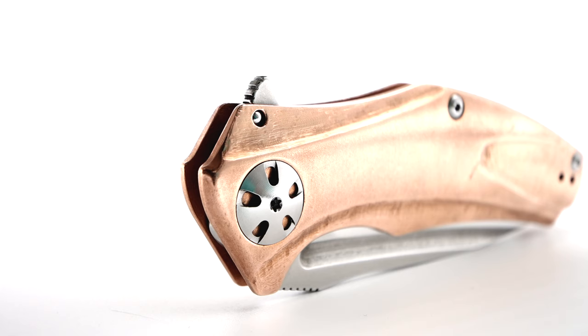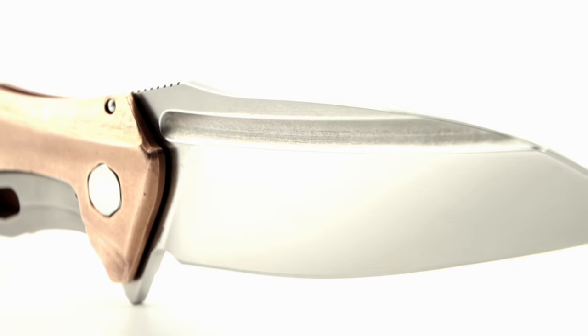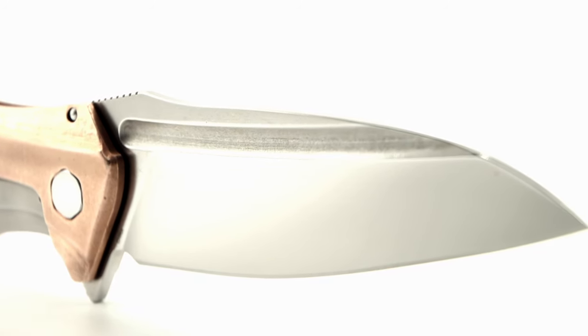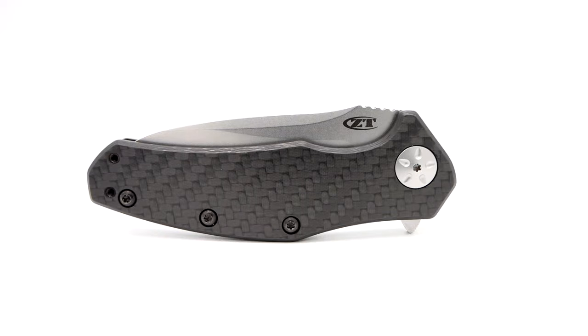The Natrix wins in fit and finish, fidget factor, deployment and retraction or action areas, deployment methods, weight, and price point. The Natrix being about 45 bucks and the ZT costing 195 bucks.